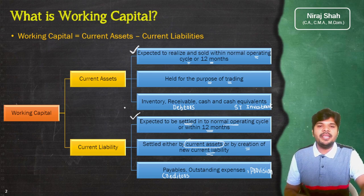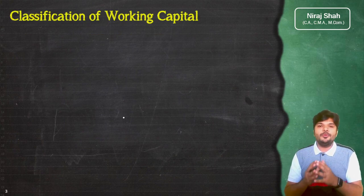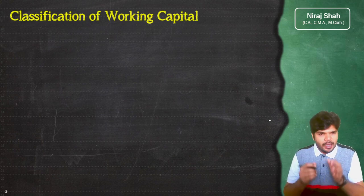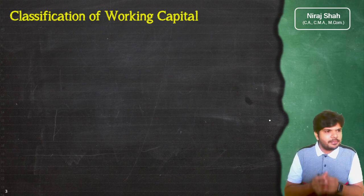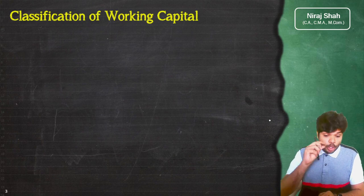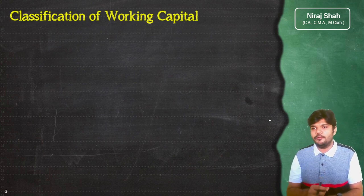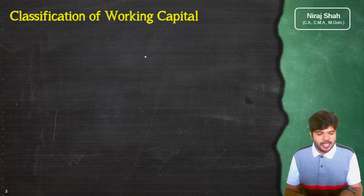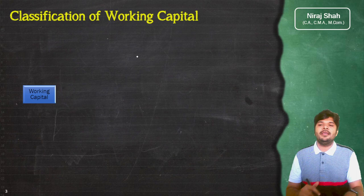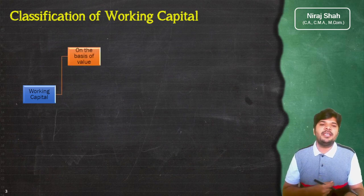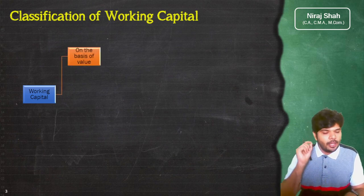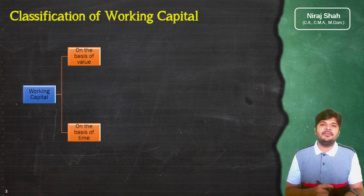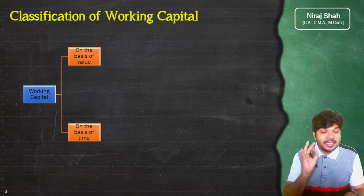Current asset और current liability की definition अच्छी तरह समझने के बाद, दूसरा point है classification of working capital। Working capital के दो तरह के classification होते हैं — एक होता है on the basis of value of the working capital, और दूसरा classification होता है on the basis of time।